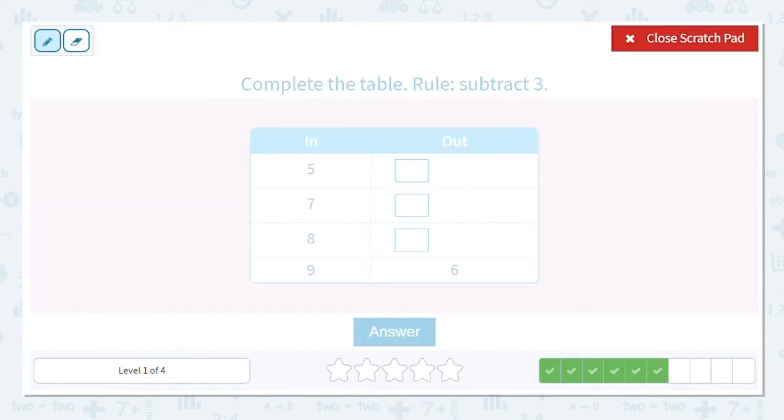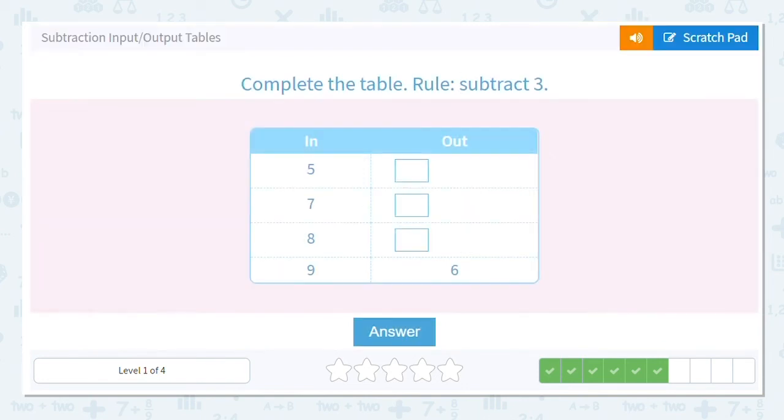Next one. This time we're subtracting 3 again. Subtracting 3 every time. And our bottom one is our check. Is 9 minus 3, 6? Yes. So 5 minus 3 equals 2, 7 minus 3 equals 4, and 8 minus 3 equals 5. What you want to do is look for patterns. So you can see on our input side we have 5, 7, 8, 9. And you can look for patterns on the output side. This is the nice thing about these input and output tables.